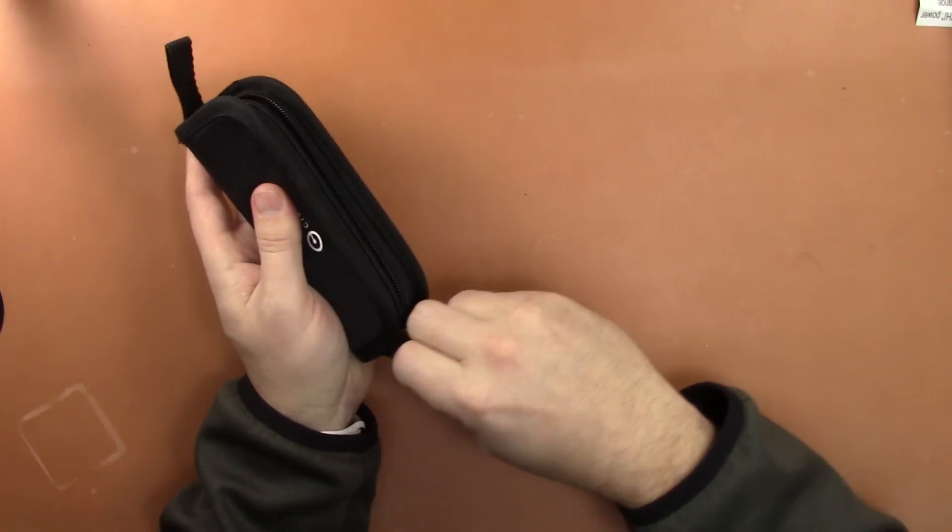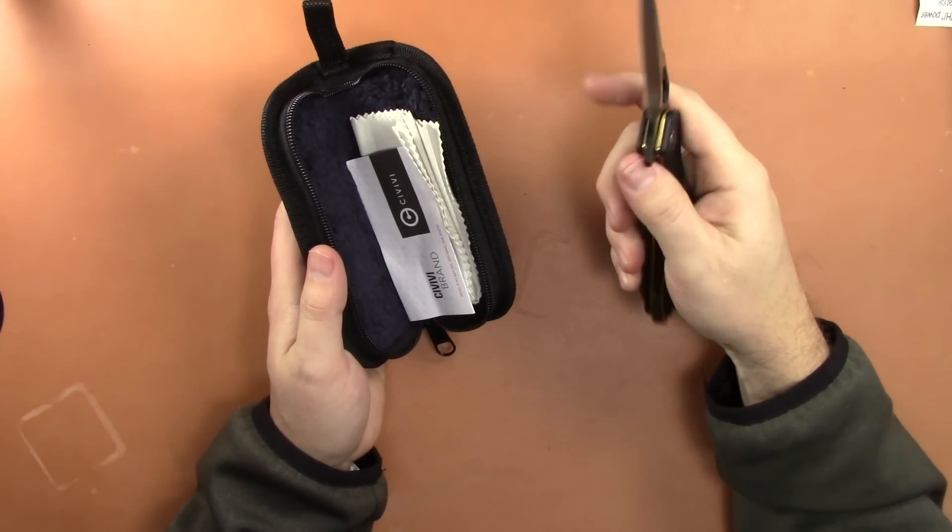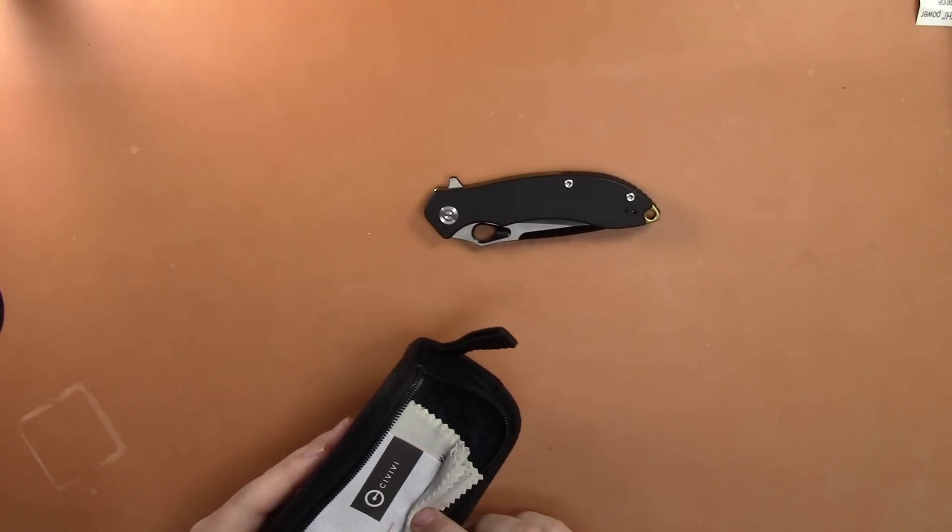This is part of our pass around group. And this one is the Aquila. I'm saying the Q right. You think that's how you pronounce it? I could be wrong.